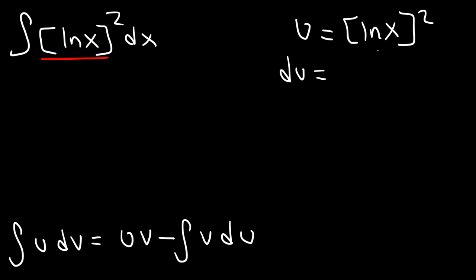So first use the power rule. So it's going to be 2 times ln x raised to the first power multiplied by the derivative of the function on the inside. The derivative of ln x is 1 over x.